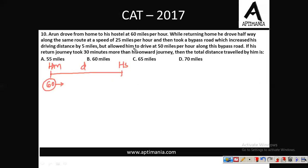While returning home, he drove half the way — that is D/2 distance — at a speed of 25 miles per hour. Then he took a bypass which increased his driving distance by 5 miles but allowed him to drive at 50 miles per hour. The return journey took 30 minutes more than the onward journey. When moving from home to hostel, he travelled D miles at 60 mph, so time taken is D/60.